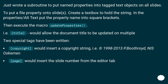Just wrote a subroutine to put named properties into tagged text objects on all slides. To put a file property onto slides: create a text box to hold the string, and in the property or alt text field, put the property name in square brackets. Then execute the macro 'UpdateProperties'. For example, [title] would allow the document title to be updated across multiple slides. Two special tags have been added: [copyright] would insert a copyright string, and [page] would insert the slide number.